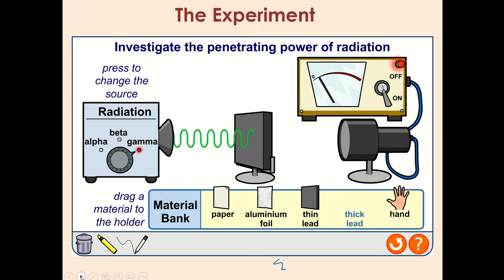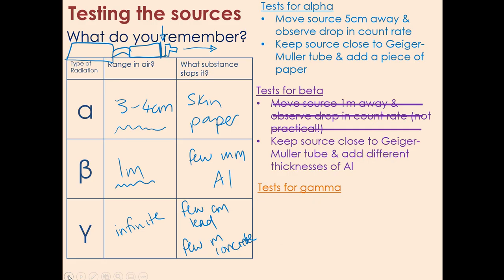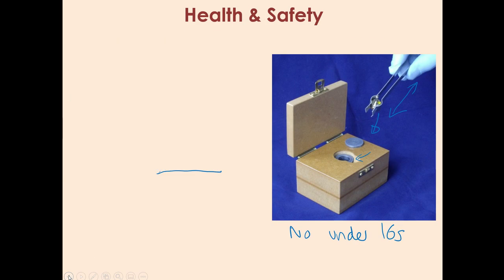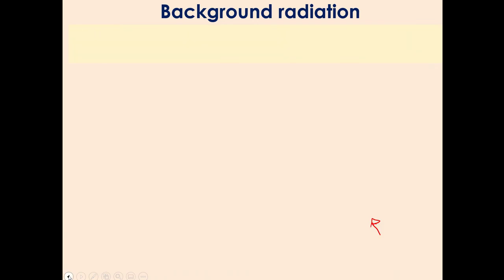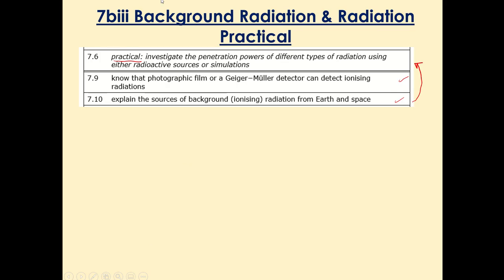That's pretty much it for this practical. Let me just go back to the learning intentions, which were: explain the practical, which mainly focuses on how to account for the background rate, the fact that because radiation is random you need to do repeats, and the health and safety. Knowing that the piece of equipment is called a Geiger-Muller tube, and explaining the main sources of background from earth, which is radon gas, and space, which is cosmic rays. That is it for this video.